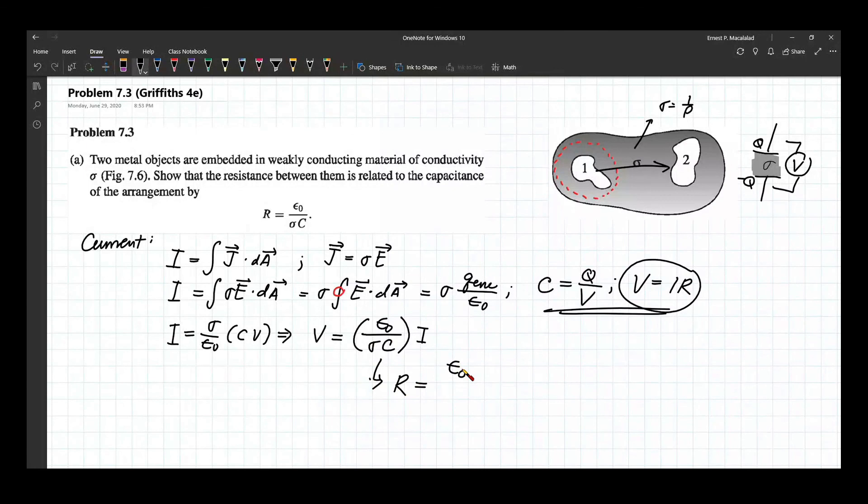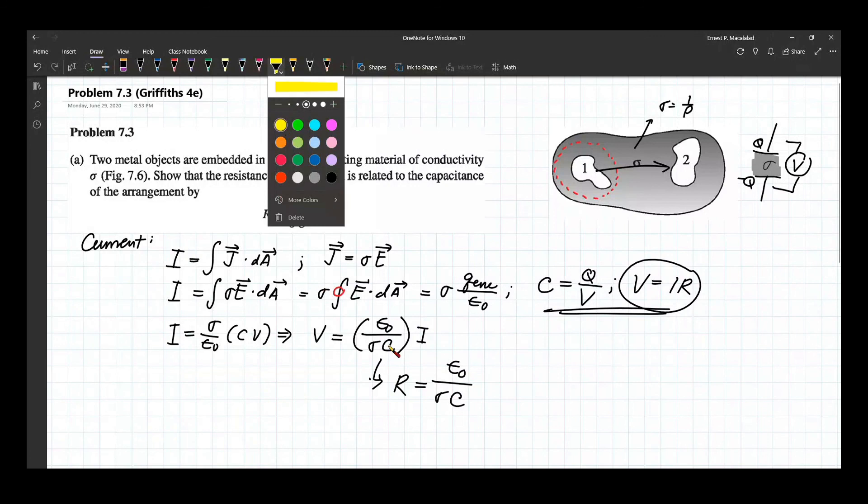So R would be epsilon naught over sigma C, and this is the result that we are looking for.